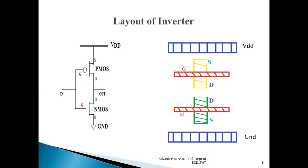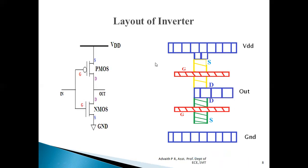When drawing layout diagrams, it is not essential to label terminals explicitly, though they are shown here for understanding. For PMOS: gate, source, and drain terminals are indicated; similarly for NMOS. Per the circuit diagram, the gate of PMOS is connected to the gate of NMOS, which serves as input. The source of PMOS is connected to VDD via a metal layer. The drain of PMOS is connected to the drain of NMOS, which serves as the output. The source of NMOS is connected to ground via a metal layer.